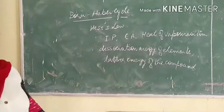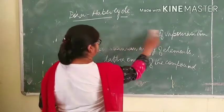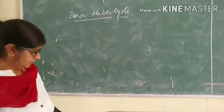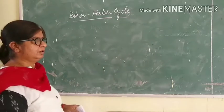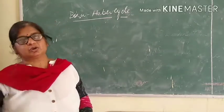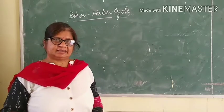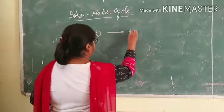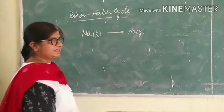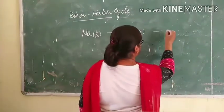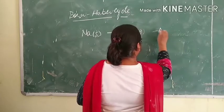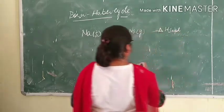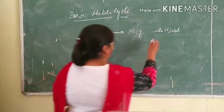We can see this by the formation of sodium chloride. Sodium is present in the solid form, so we need sodium to be converted to the gaseous state. For changing sodium from the solid to the gaseous state, we need some energy. This energy is the sublimation energy, which we can write as delta S sublimation — that is, the heat of sublimation.